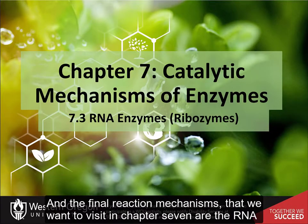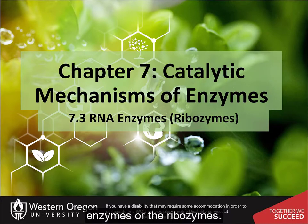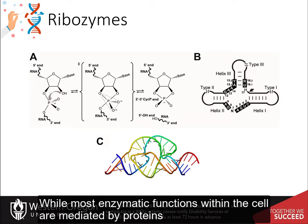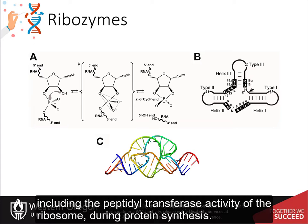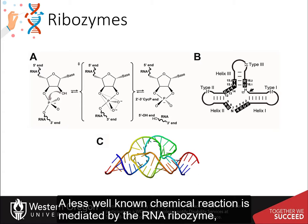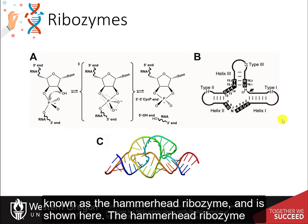The final reaction mechanisms in Chapter 7 are the RNA enzymes, or ribozymes. While most enzymatic functions within the cell are mediated by proteins, some key cellular processes are mediated by RNA enzymes, including the peptidyl transferase activity of the ribosome during protein synthesis. A less well-known chemical reaction is mediated by the RNA ribozyme known as the hammerhead ribozyme, shown here.